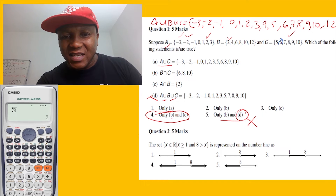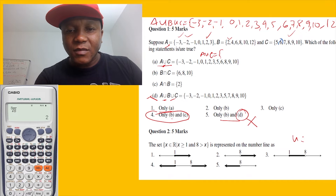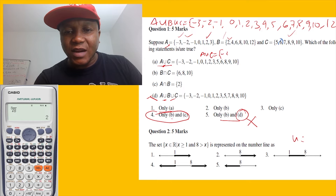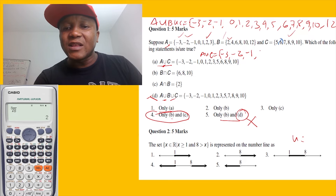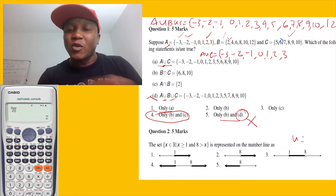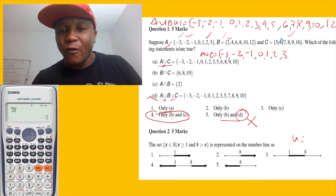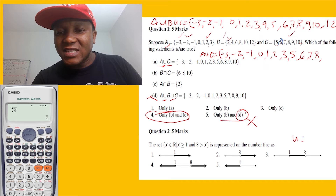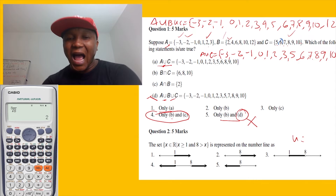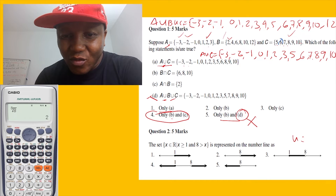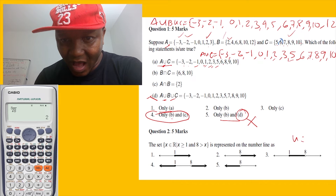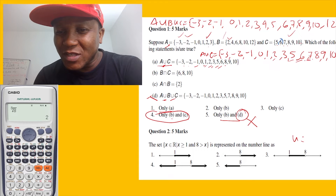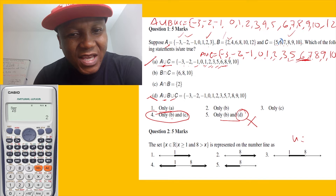Redoing A union C: A is negative three, negative two, negative one, zero, one, two, three. C starts from five — we have five, six, seven, eight, nine, ten. Now checking against the given answer: negative three, negative two, negative one, zero, one, two, three, five, six — but here we got seven, and the answer doesn't have seven.